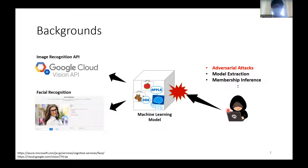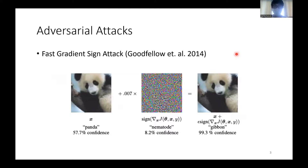First, I'll talk about background. Neural networks are being applied to real-world applications but also pose security risks, such as facial recognition, which may be particularly affected by adversarial attacks. Adversarial attacks are attacks that misclassify models by adding noise to the input image. FGSM, one of the most famous attacks, proposed a method to generate adversarial examples by taking the gradient of the input image and adding it as a perturbation.